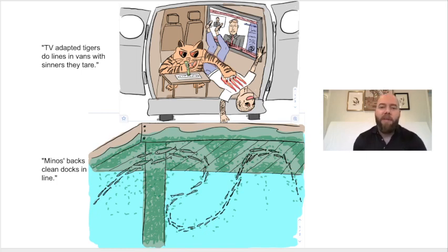So memorize: TV-adapted tigers do lines in vans with sinners they tear. Minnows' backs clean docks in line. The images are going to help you memorize the words. The words sound exactly like the drugs. And eventually with repetition and repetition, you're going to be able to answer all these drugs by IV and PO without having to read the sentence out loud because the words sound exactly like the drugs.